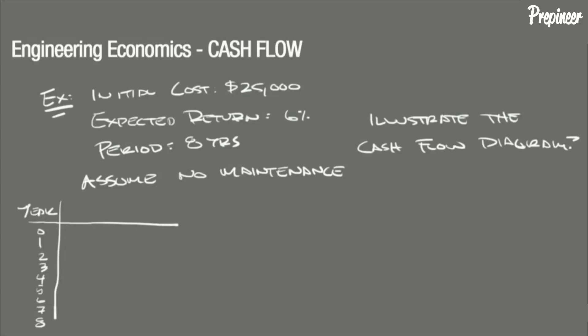The second column will be cash flow. Looking back at the problem statement, we see that the business owner makes a purchase of $25,000 — that's money out of his account at the beginning of year one, or at point zero. So we put a negative $25,000.